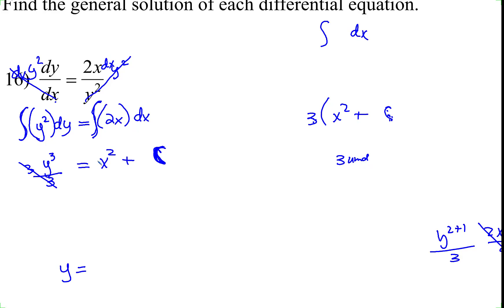So when we multiply both sides by 3, we have y cubed equals 3x squared plus that uppercase C. Or if you want to put 3C, that's fine.